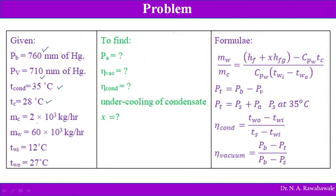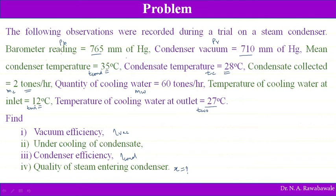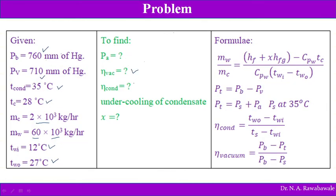We are asked to find vacuum efficiency, under-cooling (sub-cooling), condenser efficiency, and dryness fraction of steam. Under-cooling means the steam condenses at 35°C but the condensate leaves at 20°C — the difference of 15°C is the sub-cooling. We need to calculate condenser efficiency and dryness fraction as in the previous case.